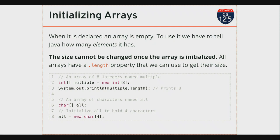On line two I'm creating an array of integers. The name of the array is 'multiple'. On the right side I have an initialization — I have some new syntax, literally the keyword 'new', then the same type that's on the left side, and inside the brackets a literal that tells Java how many elements I want this array to store. This creates an array that's going to store eight integers. This says: Java, please create a new array to store eight integers, and I'm going to refer to that array using the variable name 'multiple'.